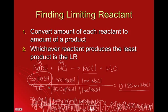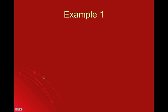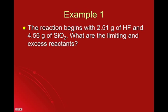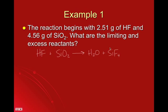From here on out, you do all of your calculations with your limiting reactant. Another example: a reaction begins with 2.51 grams of HF and 4.56 grams of SiO₂. What are the limiting and excess reactants? First, we need a balanced reaction. HF plus SiO₂ is a double replacement reaction — hydrogen and silicon switch places to form water and silicon tetrafluoride, SiF₄, because silicon is +4 and fluorine is -1. Balancing gives coefficients 4, 1, 2, 1.